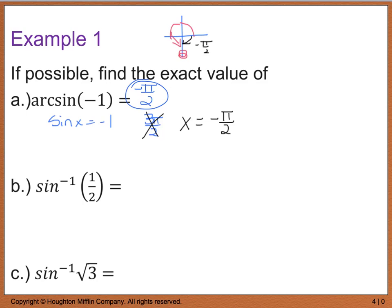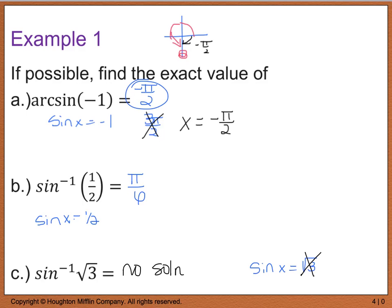For the inverse sine of 1/2, I need to think: when does sine of x equal positive 1/2? It comes from quadrant 1 or quadrant 2. However, quadrant 2 is not within my given range, so it can only be the quadrant 1 answer, which is pi over 6. Finally, for the inverse sine of the square root of 3, there is no value of x where sine of x gives square root of 3, so there is no solution.